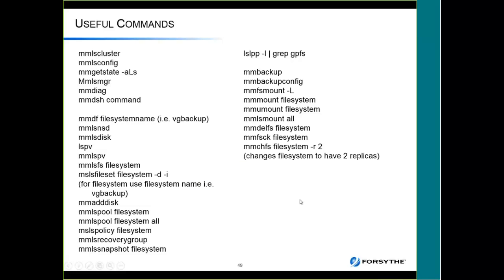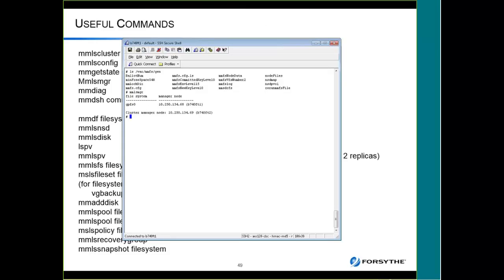Here is a list of useful GPFS commands you'll use all the time. MMLS cluster, MMLS config, mmgetstate, and so on are commands for everyday use. The MMLS manager command lists who the manager node is for the file system right now — in this case the file system manager is FT1 and the cluster manager node is FT2. Those will change depending on who gets rebooted and when.